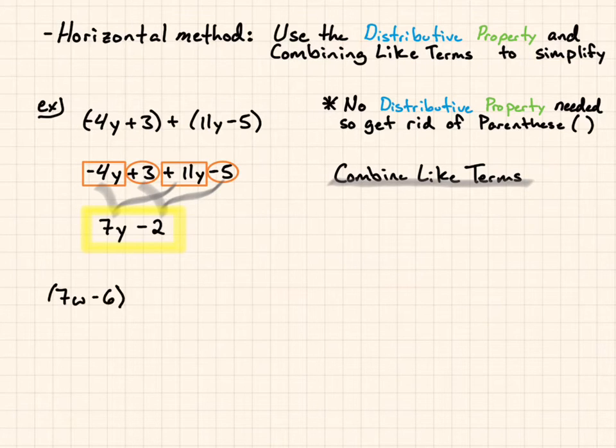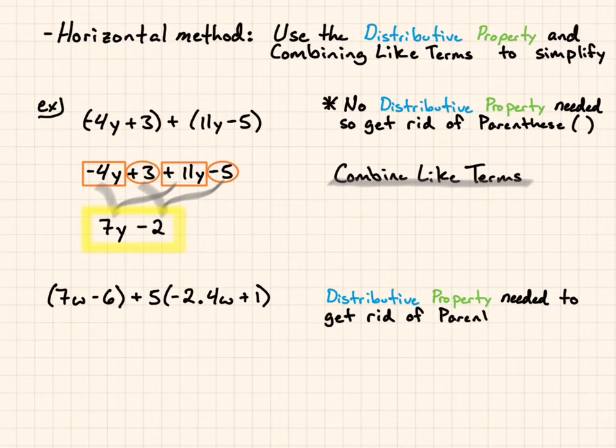Another example, if I have (7w - 6) + 5 times the quantity (negative 2.4w plus 1). I'm going to first want to use the distributive property as needed to get rid of the parentheses. So once I use the distributive property, I can get rid of those parentheses.